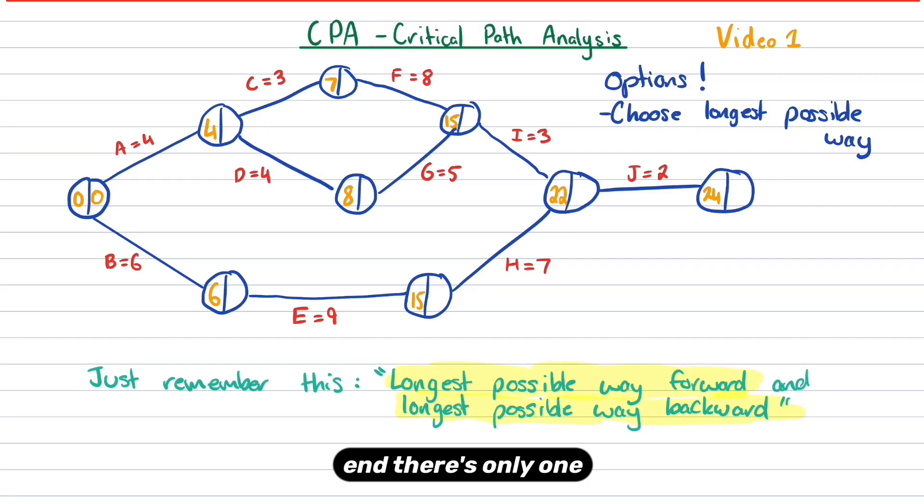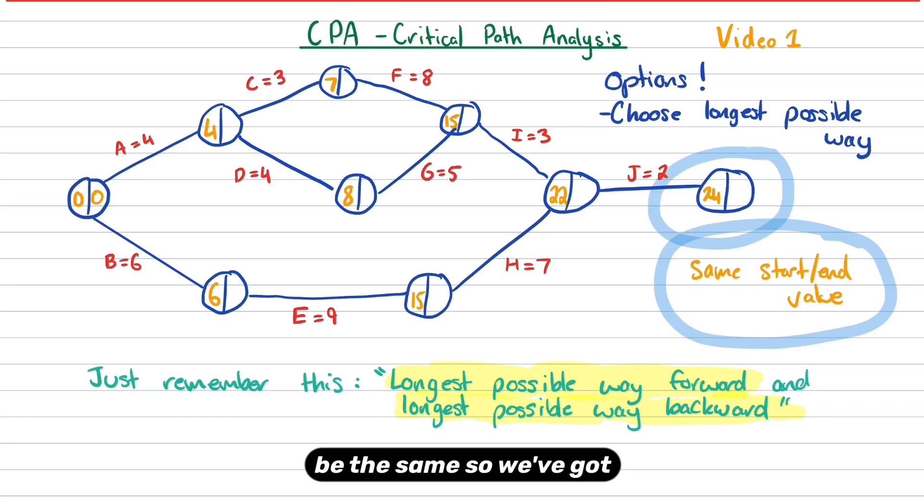And then obviously to get to the end, there's only one option. So 22 plus 24, sorry, so 22 plus two is 24. Now at the end, the start slash the end value will be the same. So we've got 24 and 24 at the end.